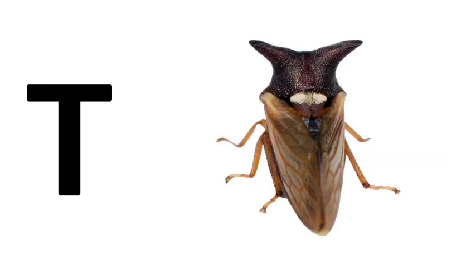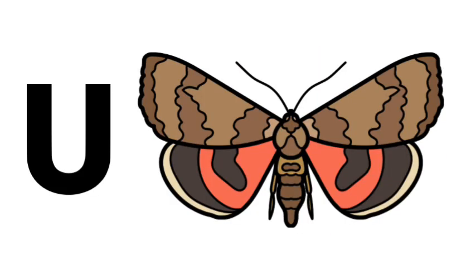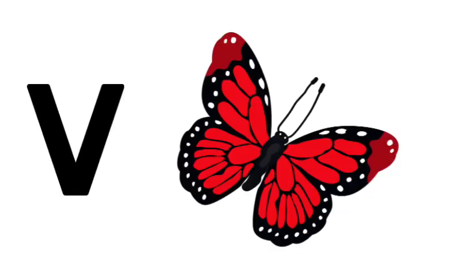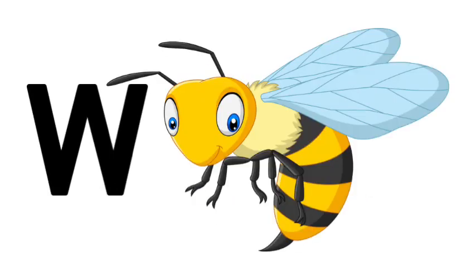T is for Treehopper, U is for Underwing, V is for Viceroy Butterfly, W is for Wasp.